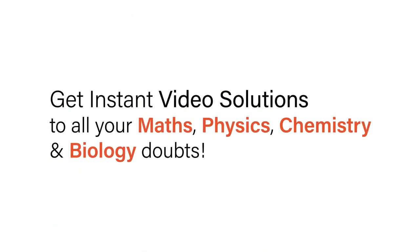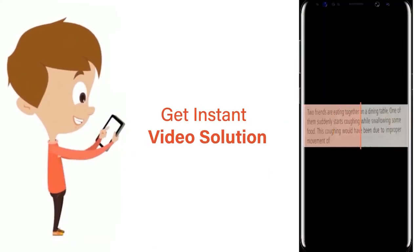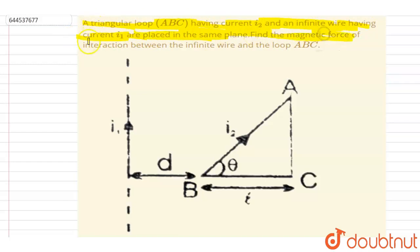With DoubtNet, get instant video solutions to all your maths, physics, chemistry and biology doubts. Just click the image of the question, crop it, and get an instant video solution. Hello everyone. A triangular loop ABC having current i2, and an infinite wire having current i1, are placed in the same plane. Find the magnetic force of interaction between the infinite wire and the loop ABC.